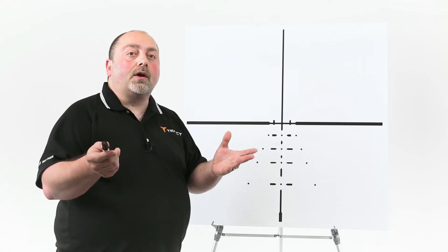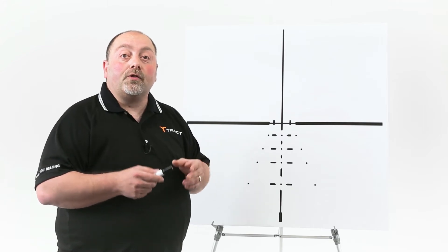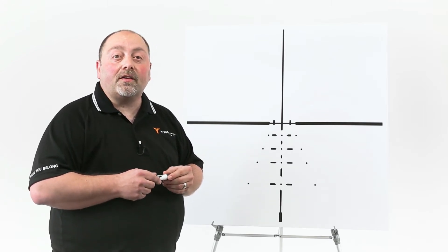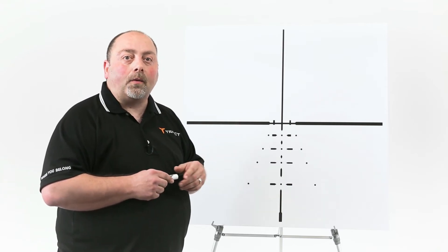But let's say you're shooting a cartridge that doesn't fall within those parameters. No problem, just go to the website, click on impact ballistics and you can actually match your exact cartridge to the reticle.